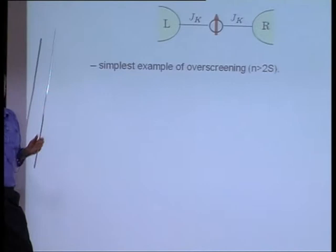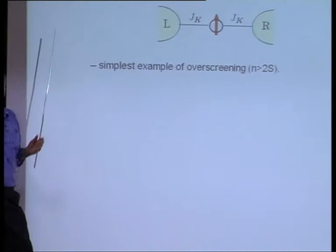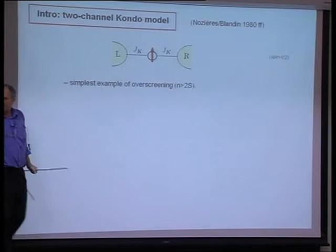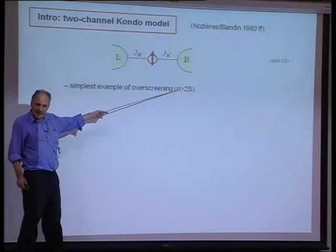It goes all the way back to the work of Nozières and Blandin in 1980, and of course it's a problem that's extremely simply stated, consisting of a single spin-one-half that's symmetrically Kondo-exchange coupled to two equivalent non-interacting metallic leads. This provides the simplest example of the phenomenon of over-screening, arising generally when the number of screening channels n, here equal to two, exceeds twice the spin.